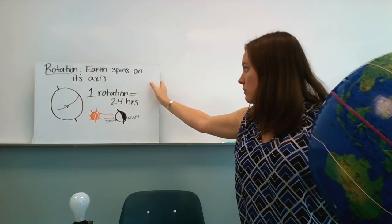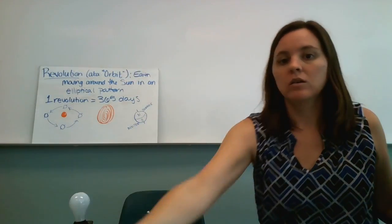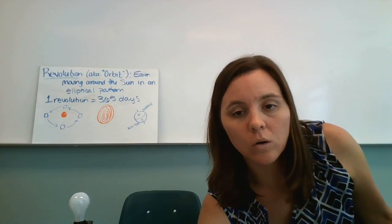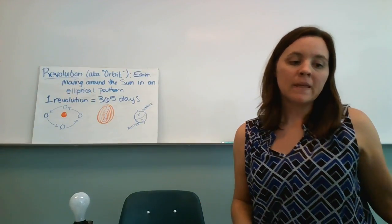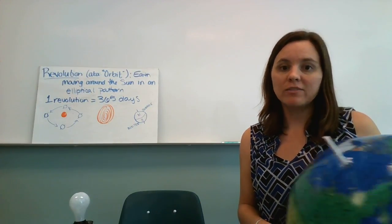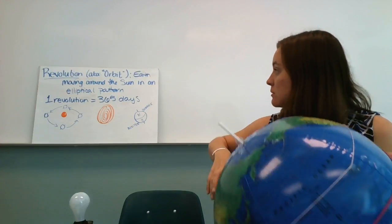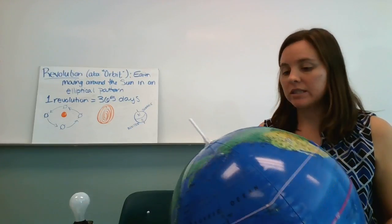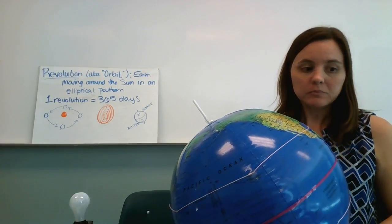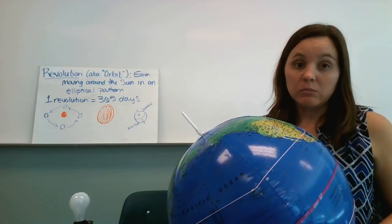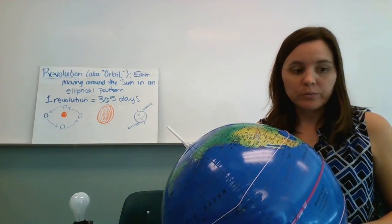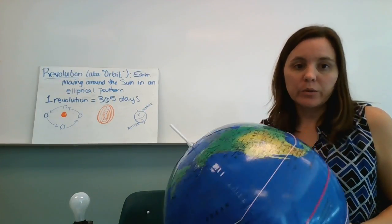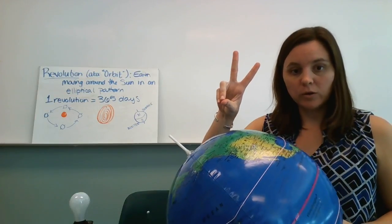We are going to talk about revolution or orbit. So this is when the earth is traveling in and it's moving around the sun in an elliptical pattern. And one revolution takes 365 days. So the revolution is part of the reason that we have seasons. So the reason that we have seasons is twofold.